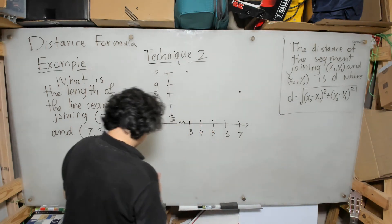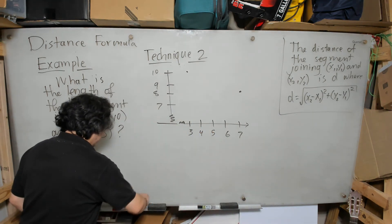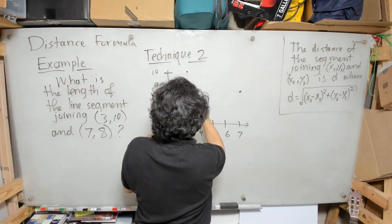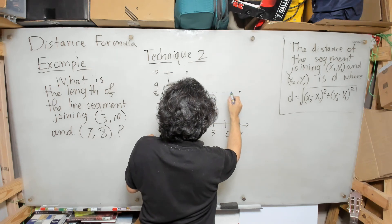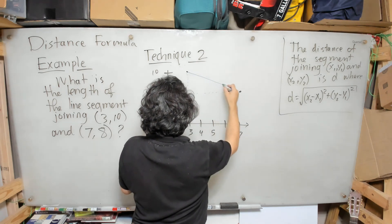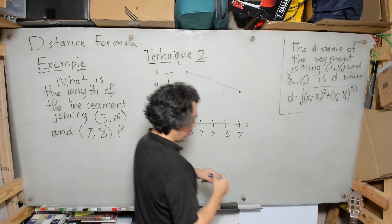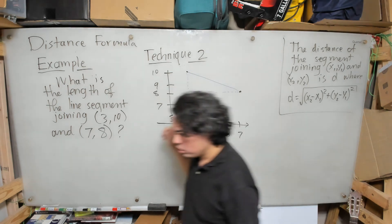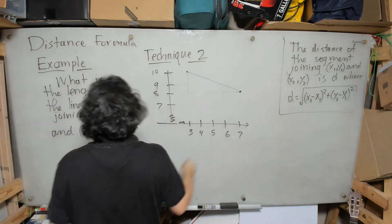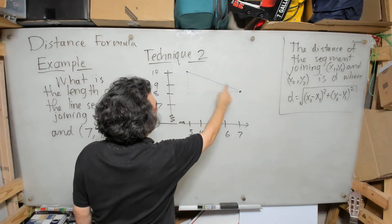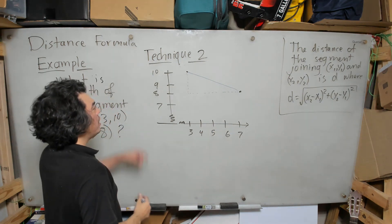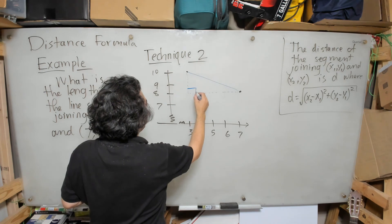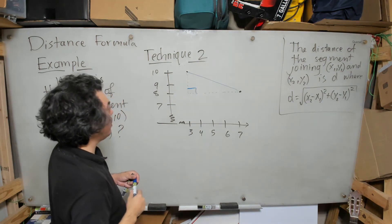And so what I see is I have this right triangle. I have drawn dotted, the vertical side of the triangle, the horizontal side of the triangle, but the segment that I'm interested in finding the length of, I have put solid. This is a right triangle.